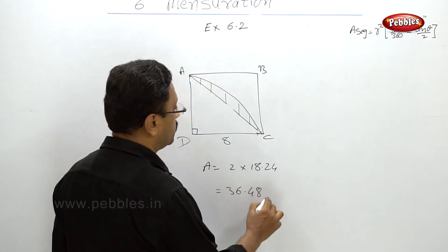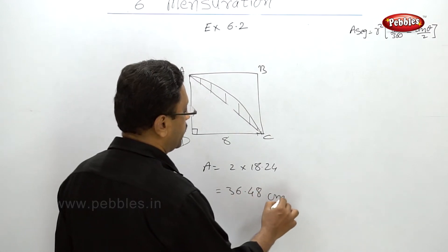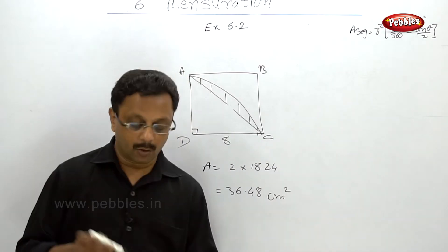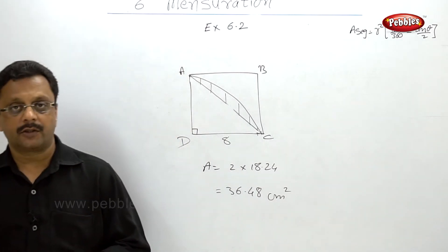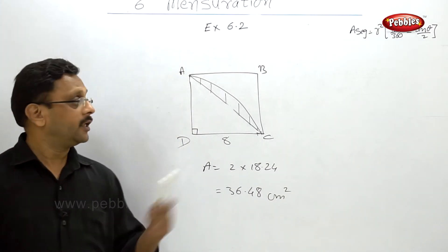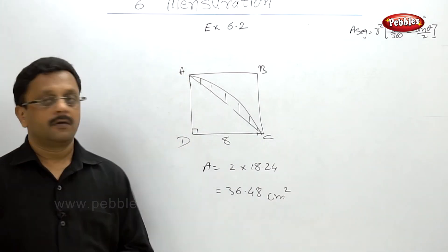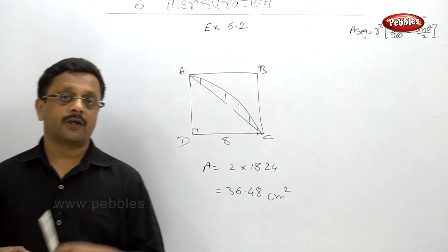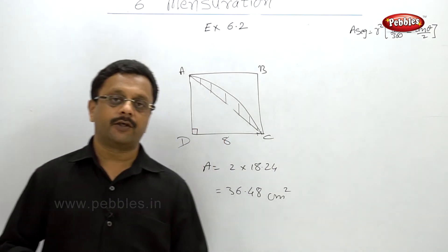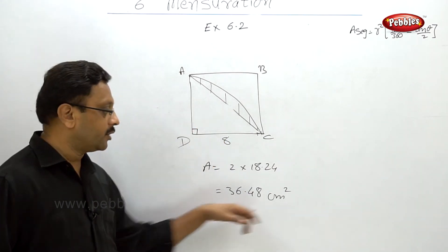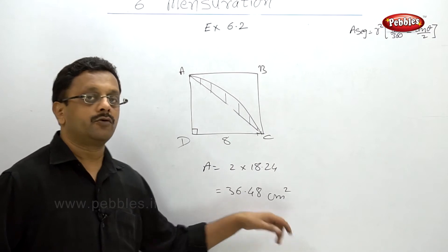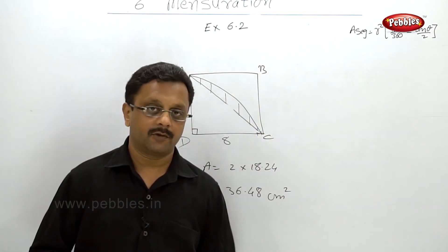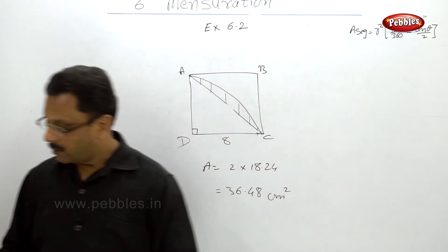The answer is area = 2 × 18.24 = 36.48 centimeters square. Don't forget to write the units. Even if units are not given in the problem, you should still write 'unit square'.